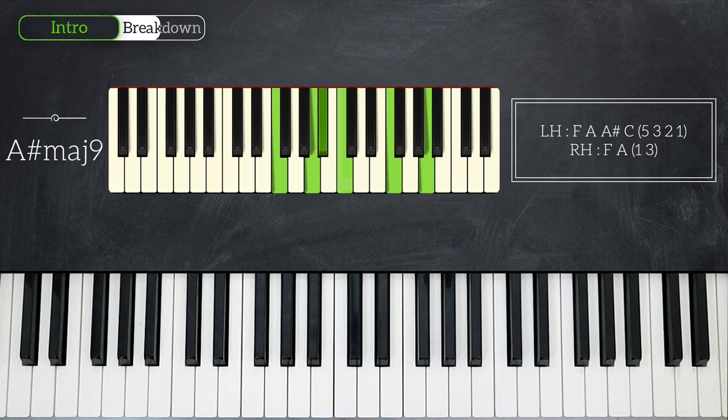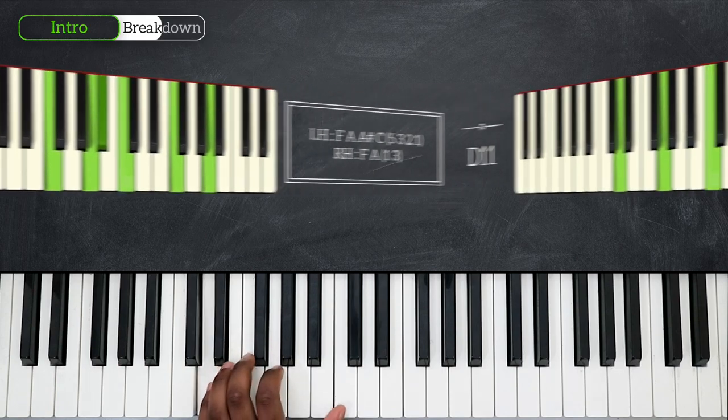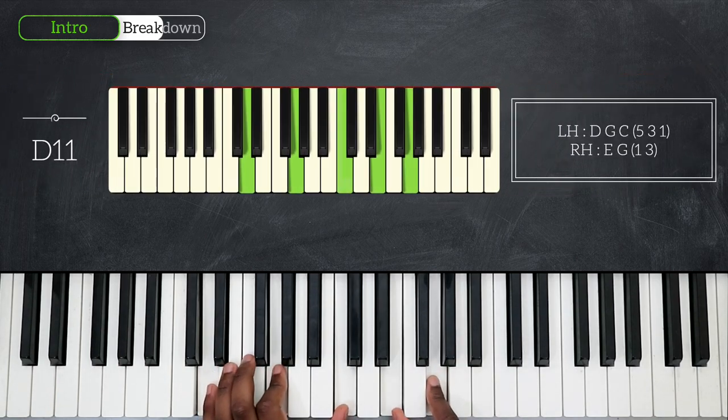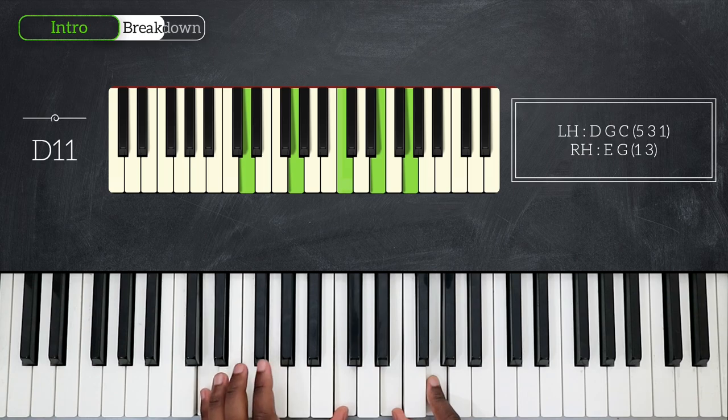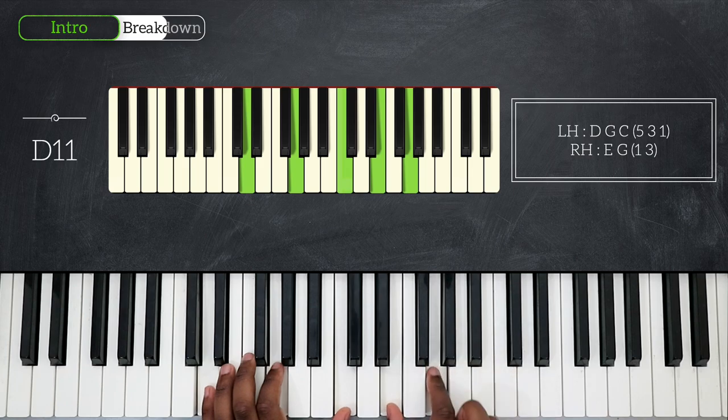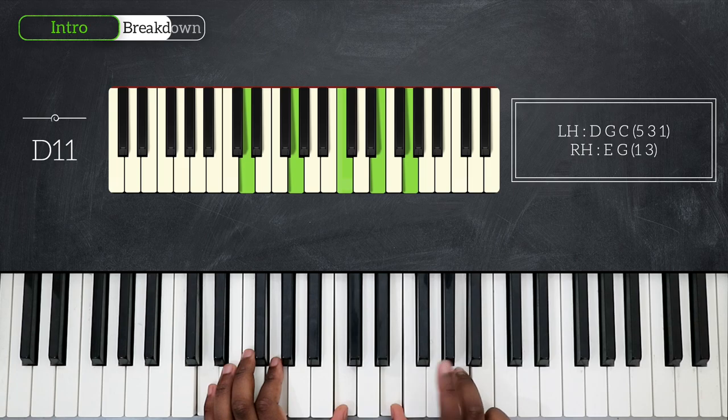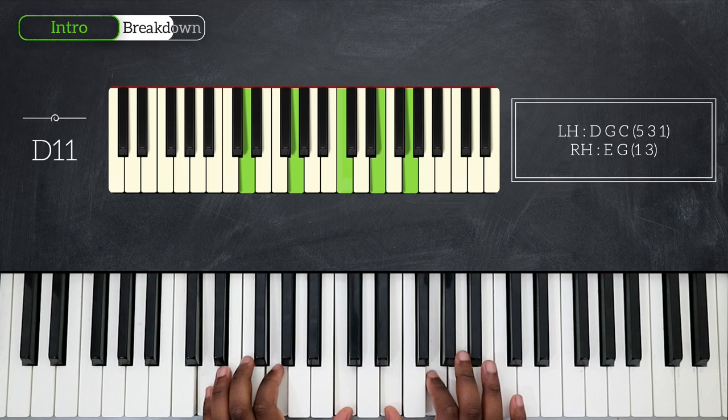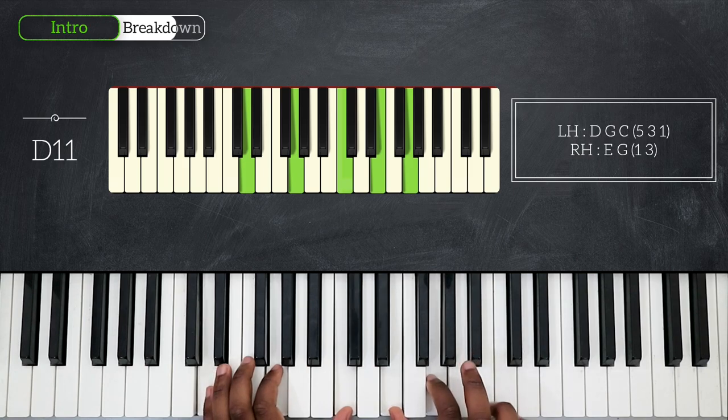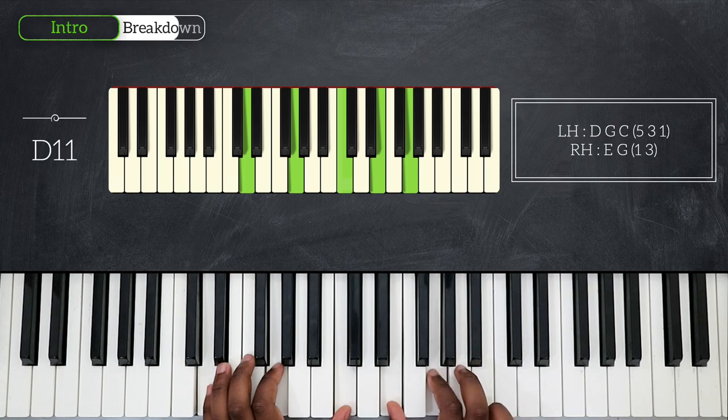And for my final chord on this pattern I have D 11. So now I have 3 notes on my left hand - that's D, G and C. Right hand plays 2 notes - E and G. And playing that chord on the 4th beat of the measure, I'm gonna add A to my right hand using my third finger. Alright, so on the 4th beat you're gonna switch your top note from G to A.